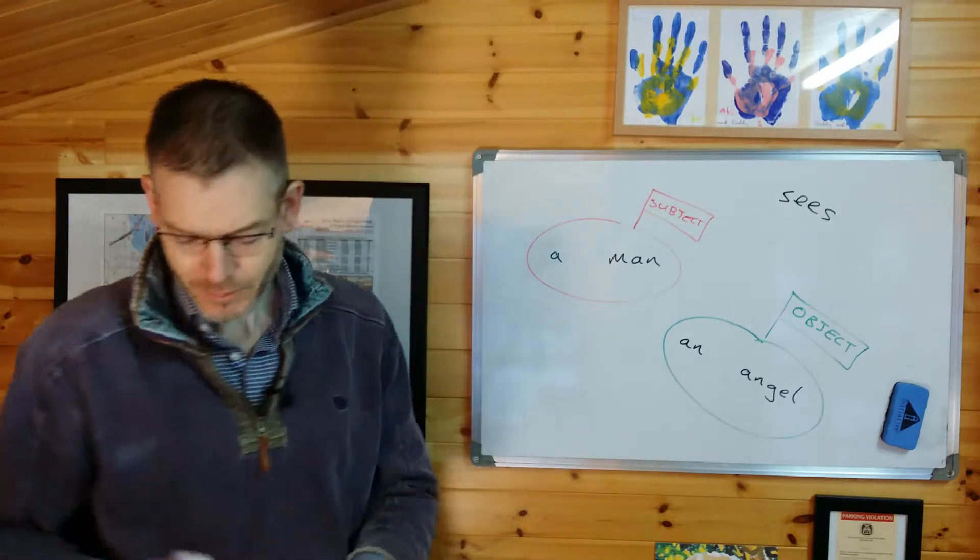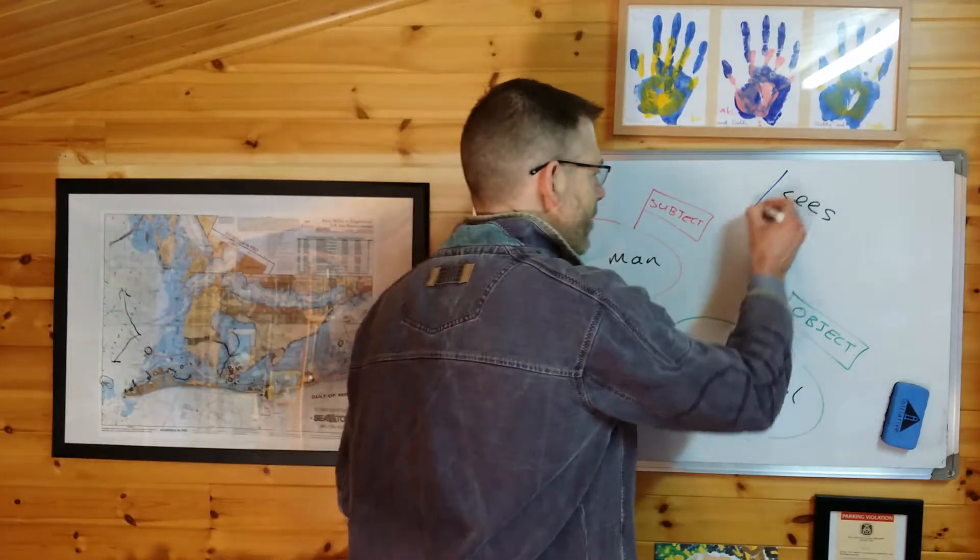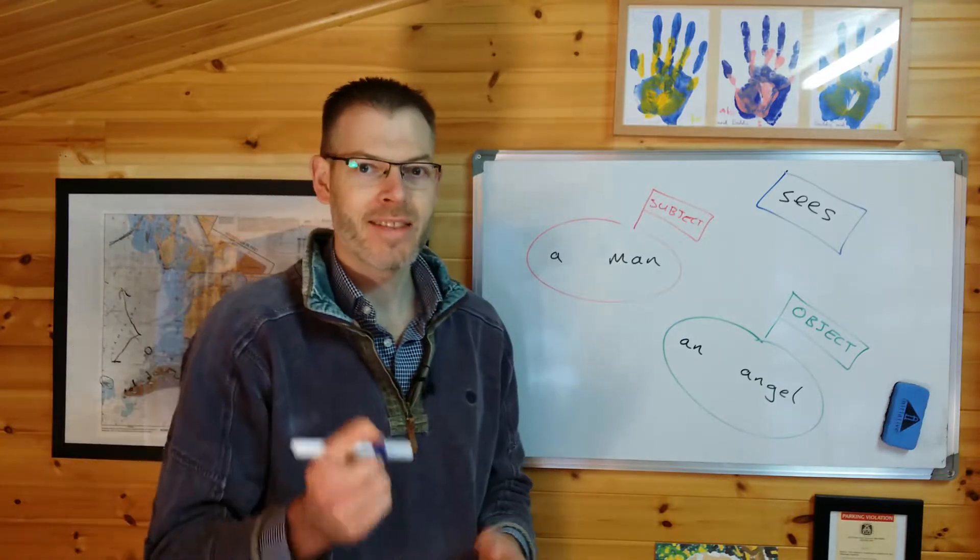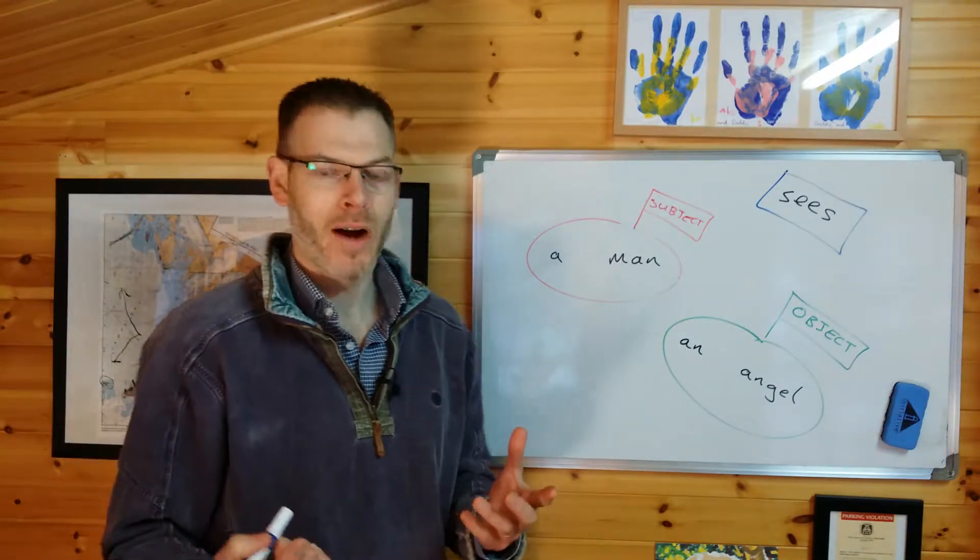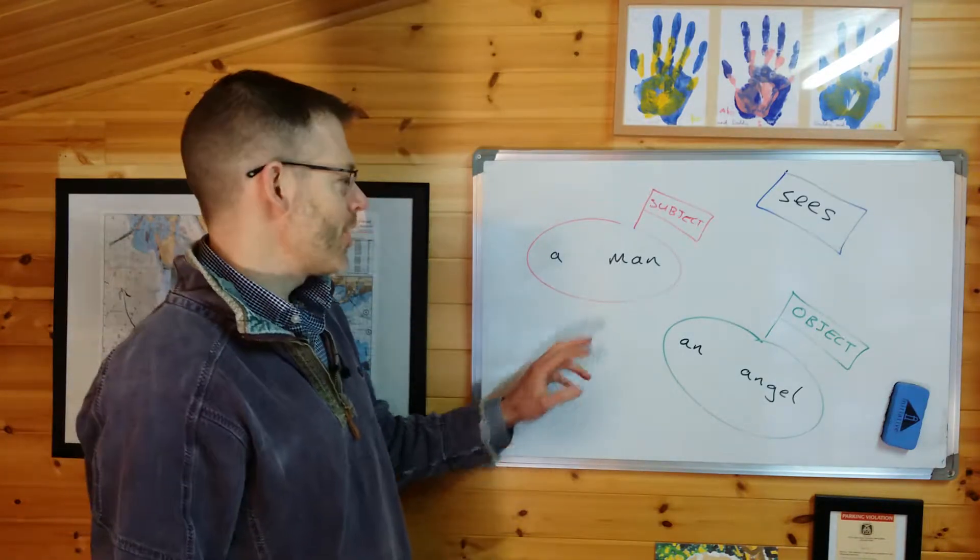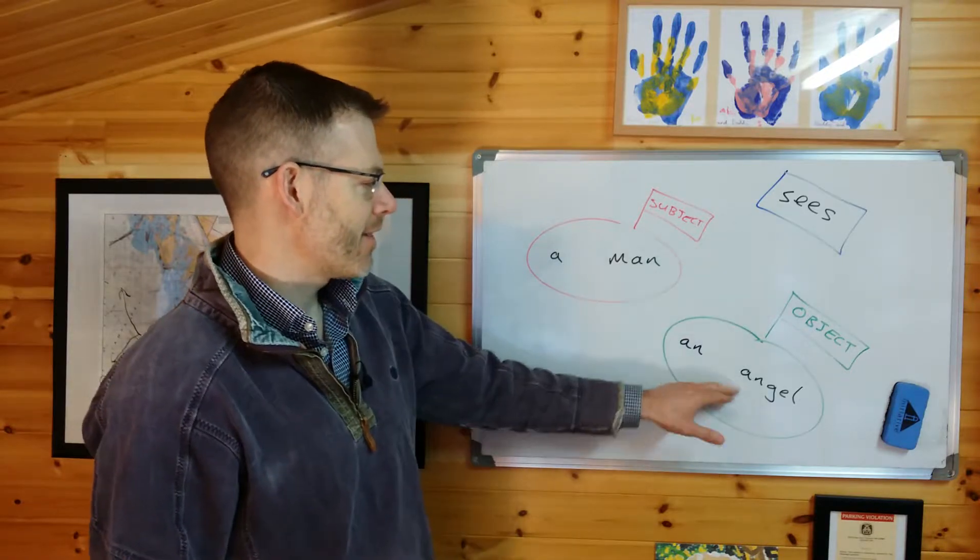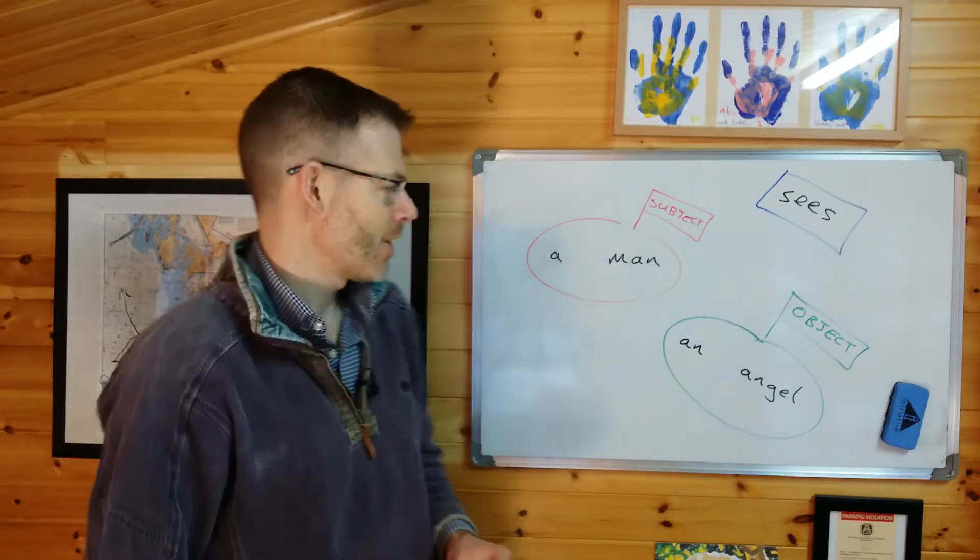And now, I can already tell very easily what the verb is because I know what verbs mean. Now, I could read this in any one of a number of ways, and I would know that it is the man who's seeing the angel, just because of the label that's attached.